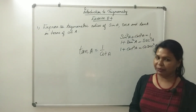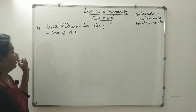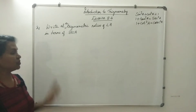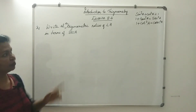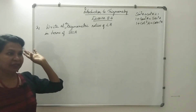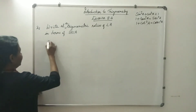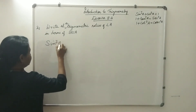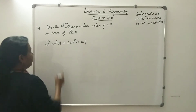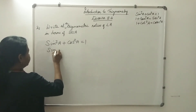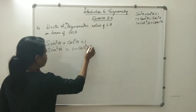Now we are asked: sinA in terms of secA. We use the identity sin²A plus cos²A equals 1. So sin²A equals 1 minus cos²A. Since cosA equals 1 divided by secA, cos²A equals 1 divided by sec²A.